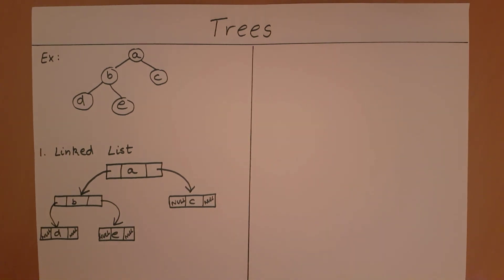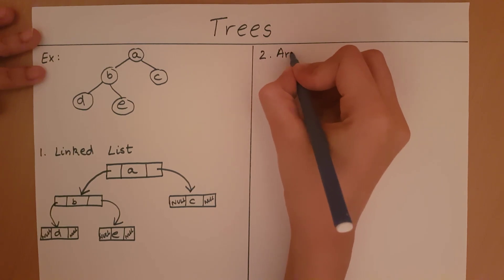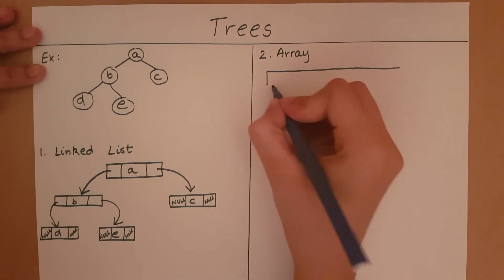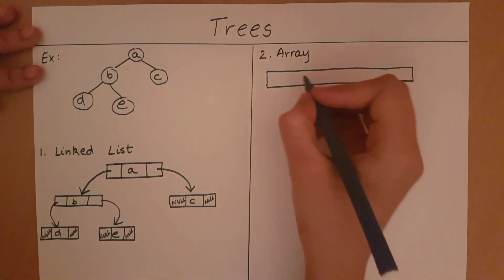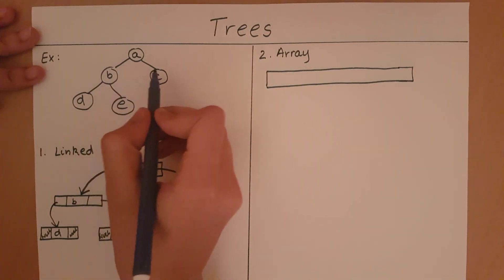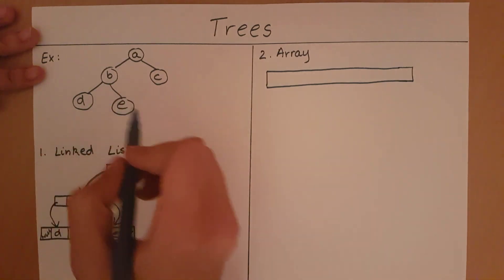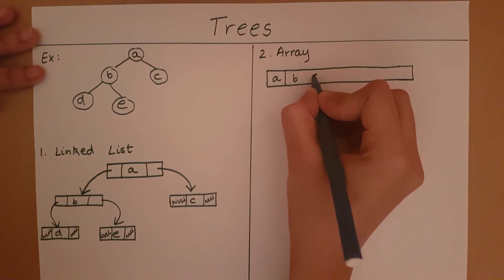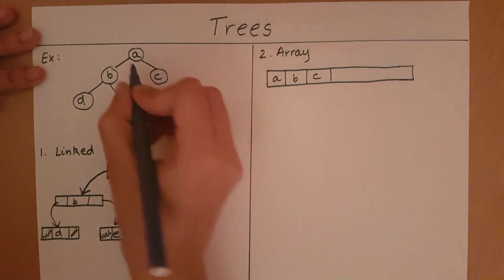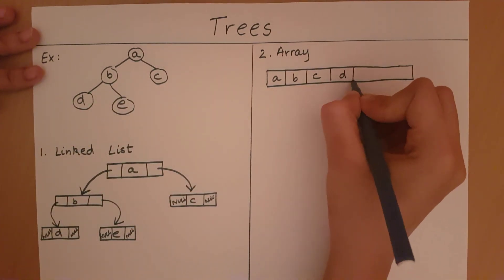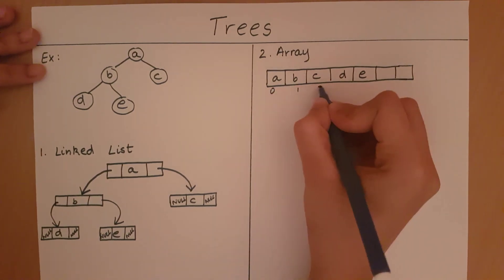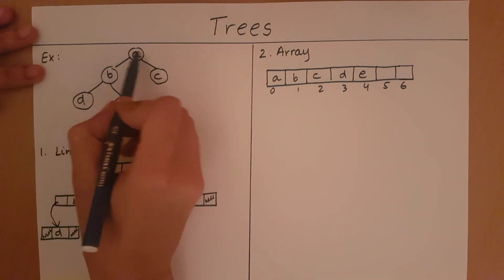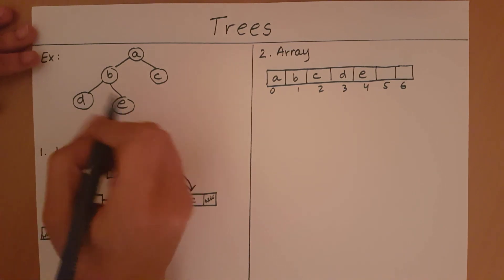Now let's look at the second method of implementation — using an array. We take an array of some particular size and traverse it level by level. First I take the root node, then the children of the root: B and C. So the order stored in the array is A, B, C, D, E — going from the first level to the second level to the third level, left to right each time.